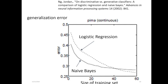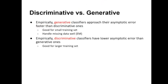That's all I want to share about generative versus discriminative classifiers. Empirically: generative classifiers are good for smaller data and also with missing data, as they have a good way to estimate missing values. Discriminative classifiers are good for large training sets and have better generalization error when you have enough data. Thank you.